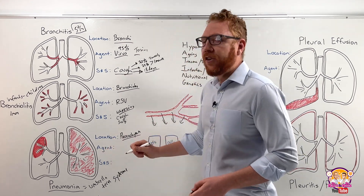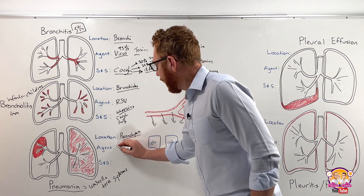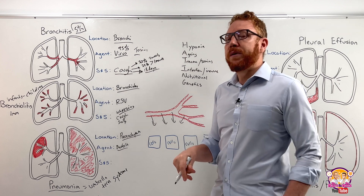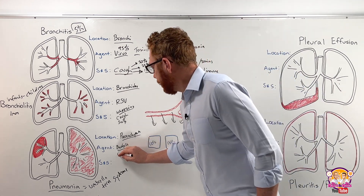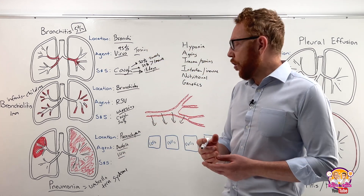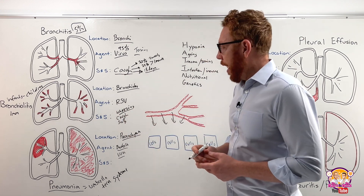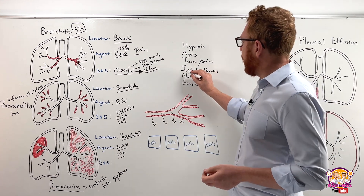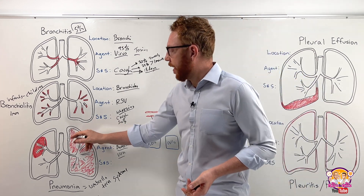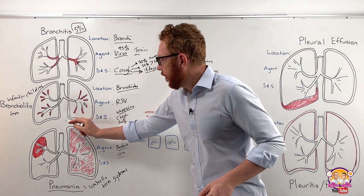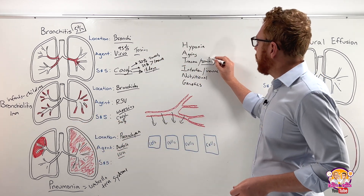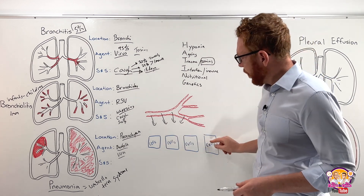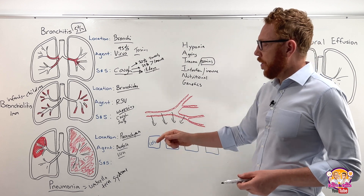Another way to categorize pneumonia is by the agent that leads to the infection. We could have bacterial — the most common bacteria being Streptococcus pneumoniae or Staphylococcus aureus. It could be viral — influenza or COVID. It could be fungi. Or if atypical, it could be a mycoplasma. All of these are infectious-based. Another type of agent that can lead to pneumonia is aspiration — if we breathe something down into our airway that we shouldn't, specifically a toxin. An example would be gastric content: if we were to vomit and then breathe it in, that would cause a lot of damage and inflammation.